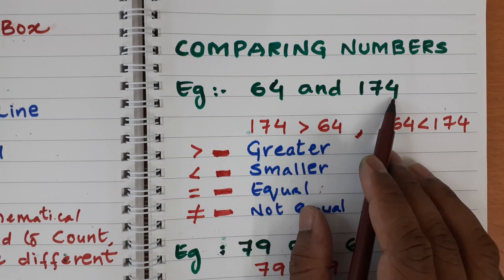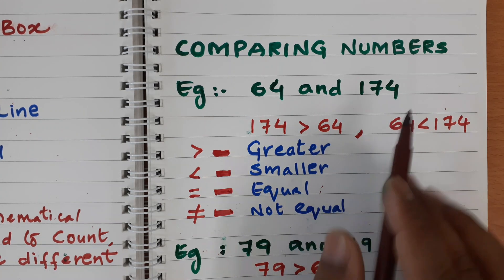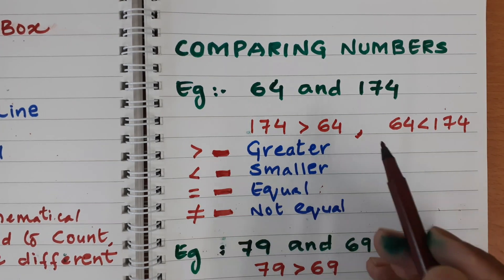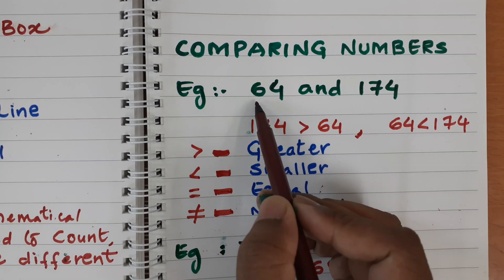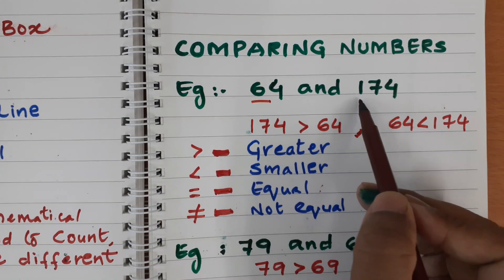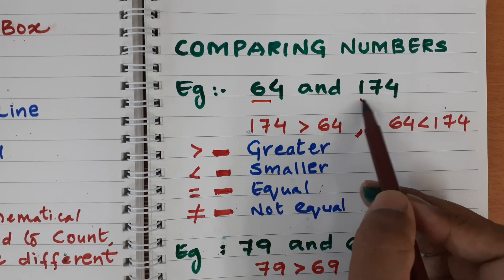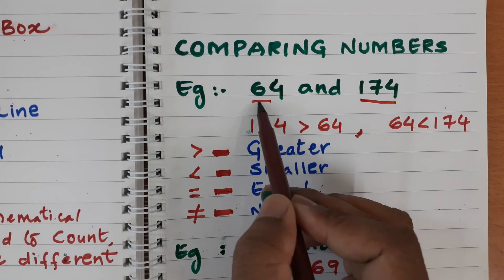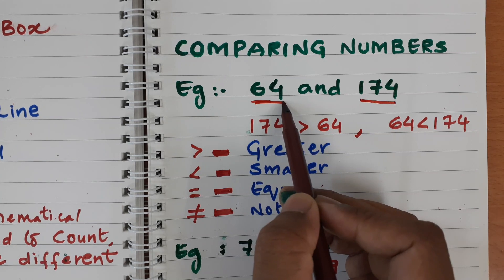From these two numbers, which is the biggest? Of course, 174. How we can say it? See, if you read this one, this is 64. This is the 10th place. Here 174, 100. Or here we have the three digits. Here we have only two digits.